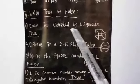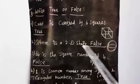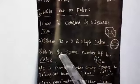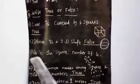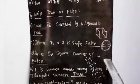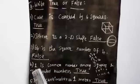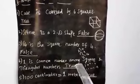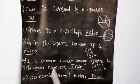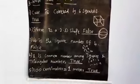Final recap of true or false: Cube is covered by six squares - yes, true. Sphere is a 2D shape - no, false; sphere is a 3D shape. 64 is a square of number four - false; 64 is the square of number eight, because eight eights are 64, while four squared equals sixteen. One is a common number among square and triangular numbers - yes, true. 100 centimeters equal to one meter - yes, true.